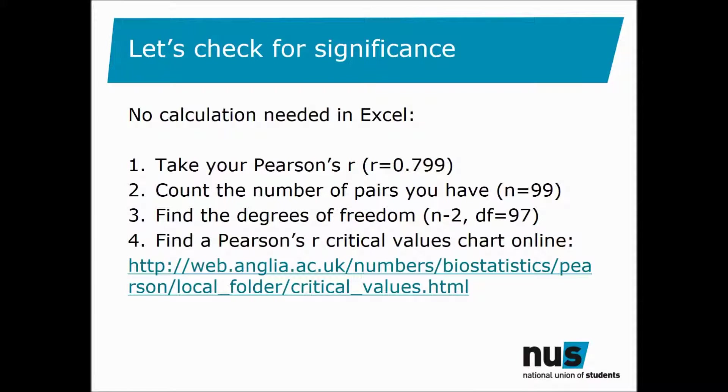So let's check your correlation for significance. First you take your Pearson's R which we calculated as 0.799. Next count the number of pairs of data. We have 99 for 99 courses. So to get your degrees of freedom value minus 2 from your number of pairs which gives you 97.